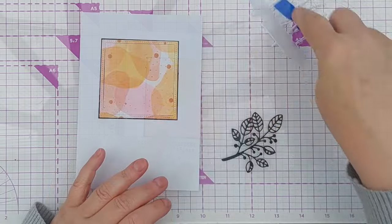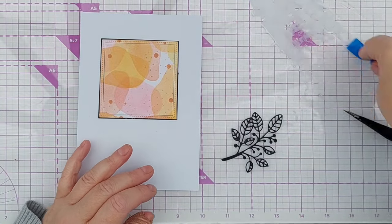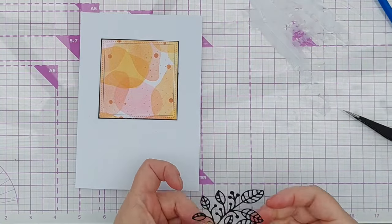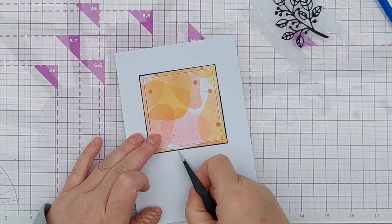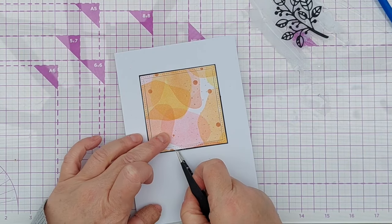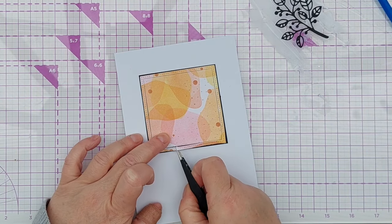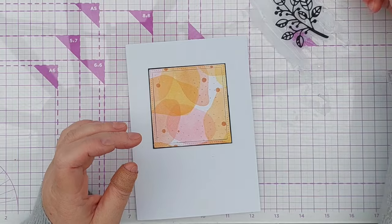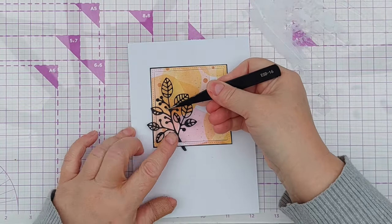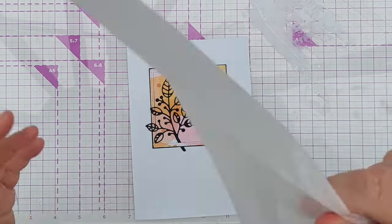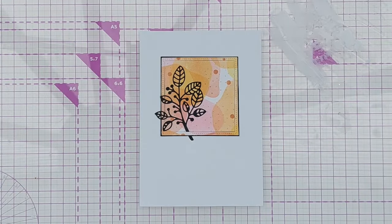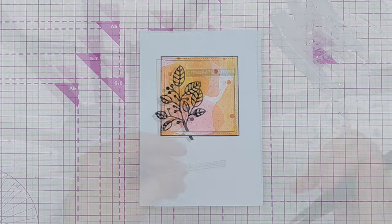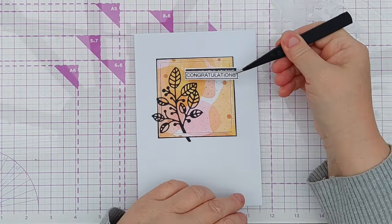Just put a little bit of hi-tack glue there, get that the right way up, dip it in. Now I've managed to glue that bit down there but I should, if I'm careful, be able to lift that up.